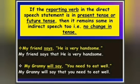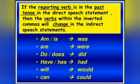You have just introduced 'that' and omitted all commas and double inverted commas. For example, 'My granny will say that you need to eat well.' Next, if the reporting verb is in the past tense in the direct sentence, then the verb inside the inverted commas will change: 'am' or 'is' changes to 'was,' 'are' to 'were,' 'do' or 'does' to 'did,' 'have' or 'has' to 'had,' 'will' to 'would,' and 'can' to 'could.'